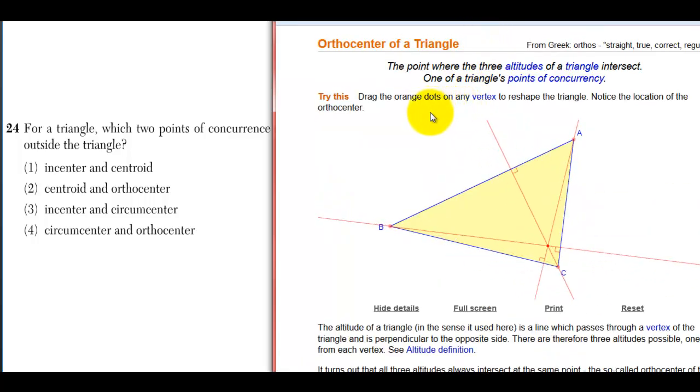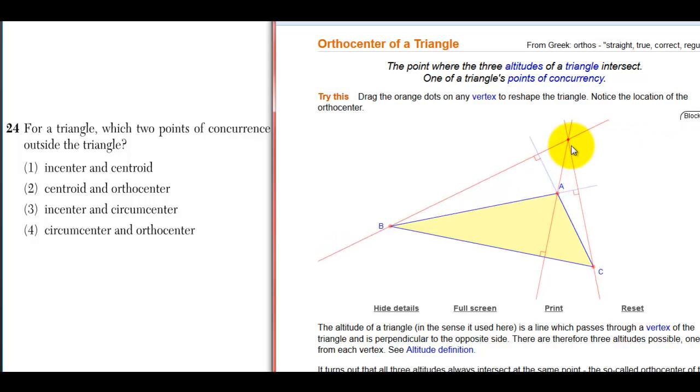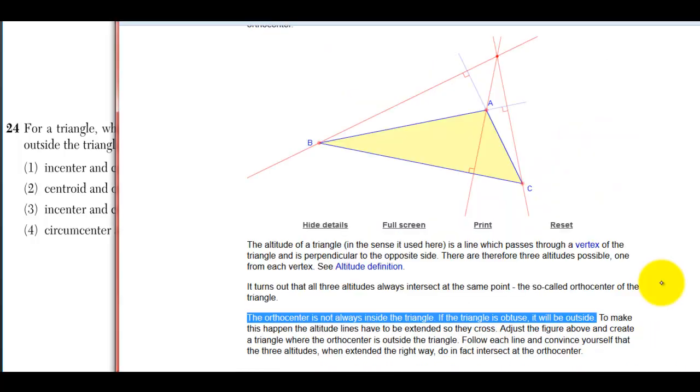The orthocenter is the point where the three altitudes of a triangle intersect. But again, I can drag the orange dot, and I can make it so that the point of concurrency is outside the triangle. Angle A is obtuse, and whenever you have an obtuse triangle, the orthocenter will be outside.